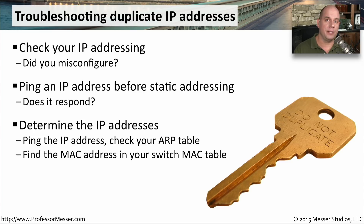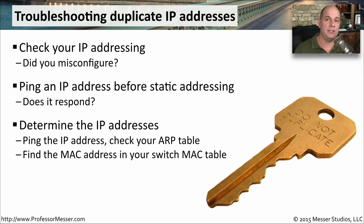You could also check the MAC address table on your switch. The switch keeps track of all devices on your network by MAC address and knows where each device is plugged in. You can ping around and see what MAC addresses are associated with the IP address you're pinging, then compare that to the MAC address table on the switch. That will tell you exactly what interface that MAC address is connected to, so you can find the machine and correct the duplicate IP address issue.